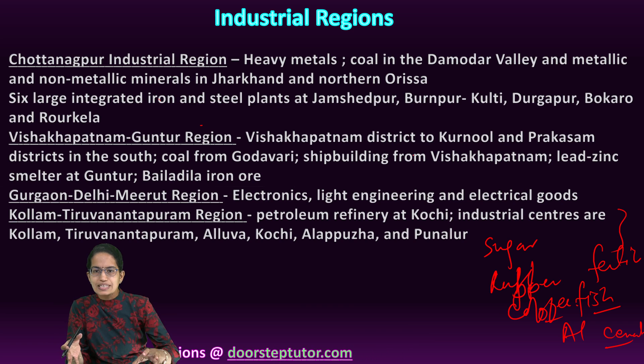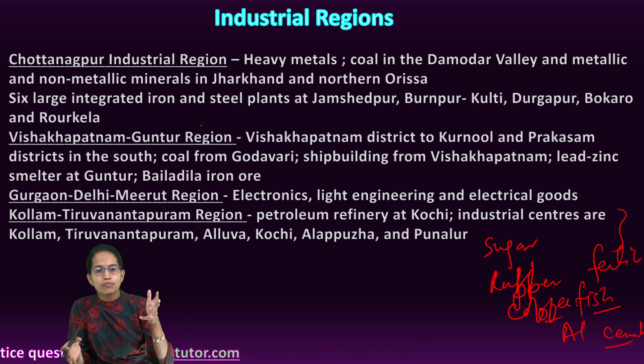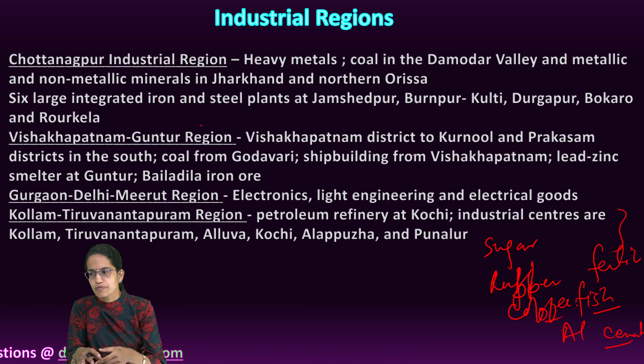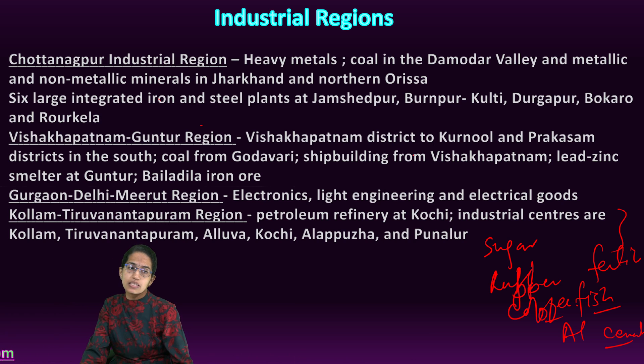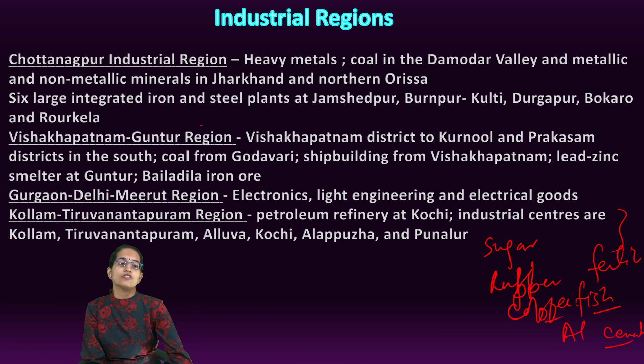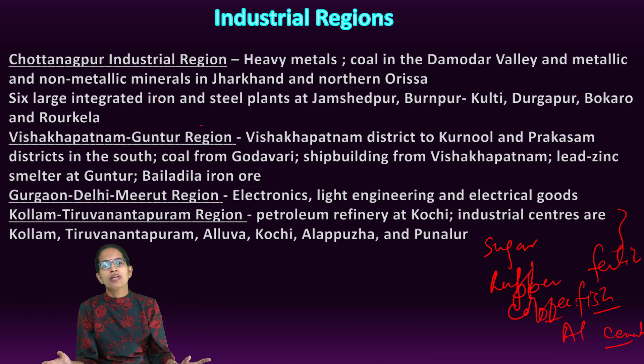The major centers in the Chhotanagpur industrial area were Ranchi, Dhanbad, Burnpur, Jamshedpur, and Hazaribagh.